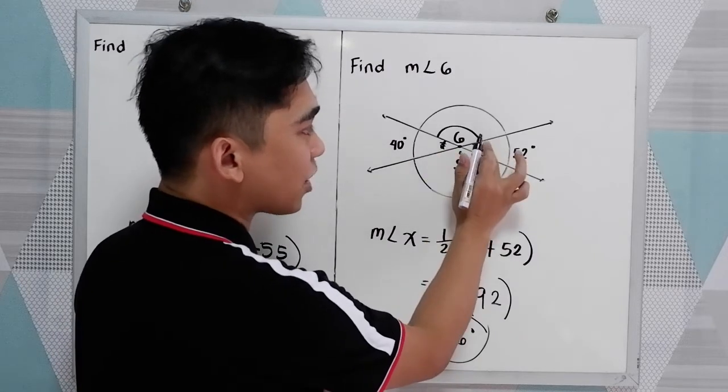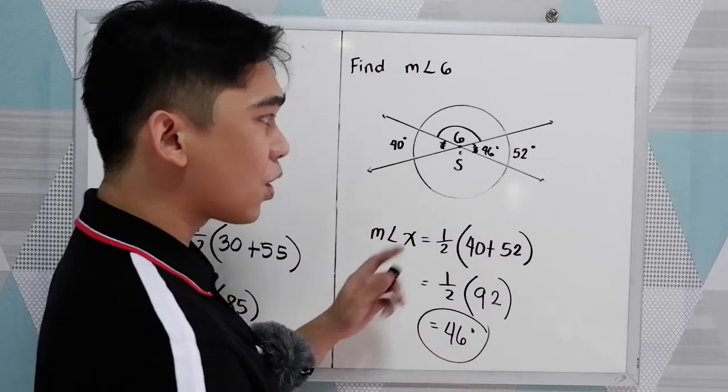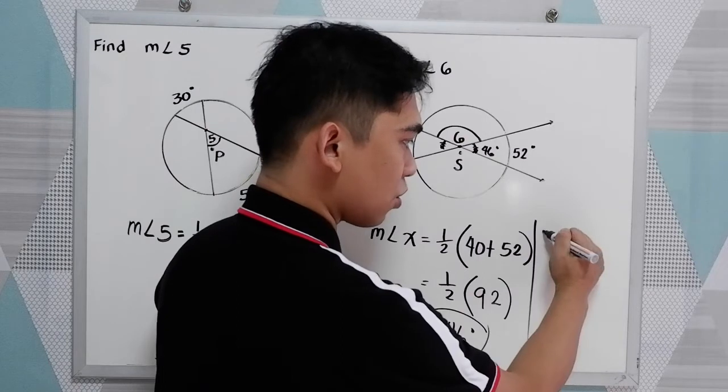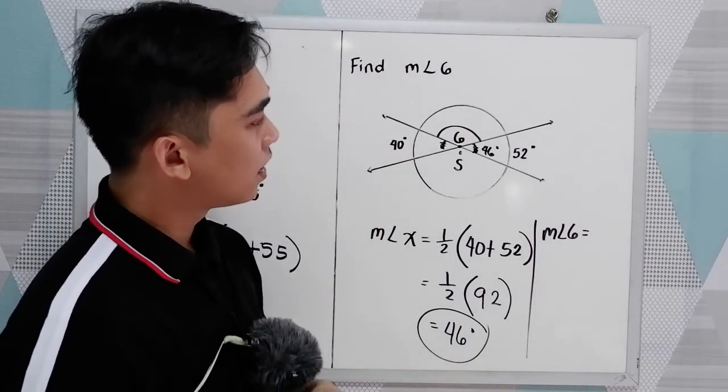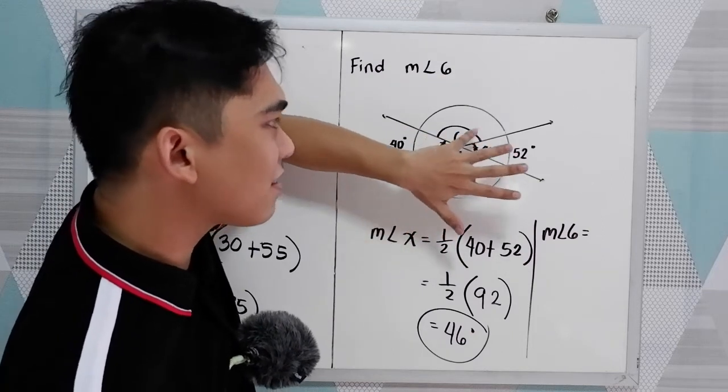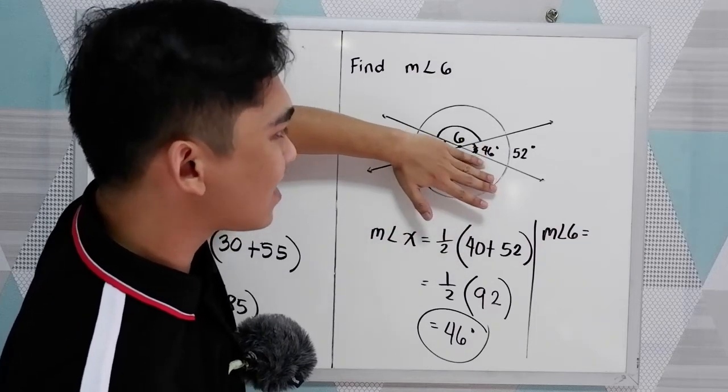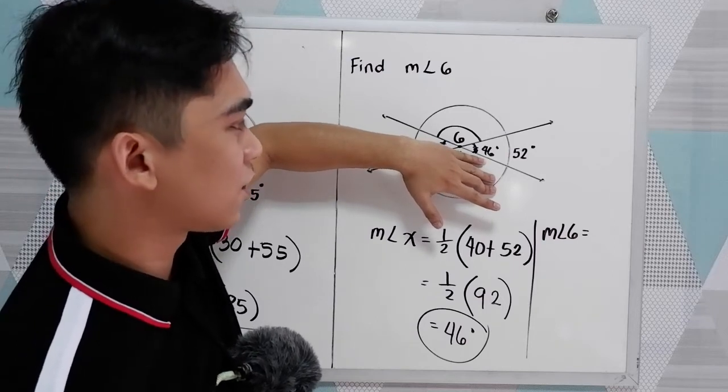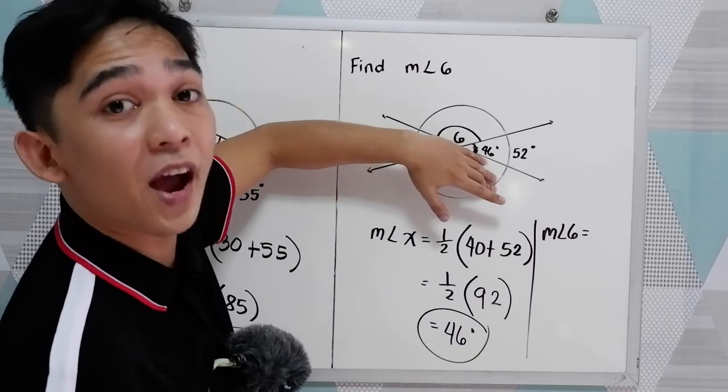So this angle measures 46 degrees. Okay, we're going to find the measure of angle 6. So, measure angle 6. Notice that angle 6 and the 46 angle lies in a straight line. So in your grade 7 and grade 8 lesson, there are supplementary angles.